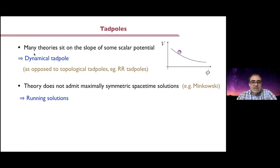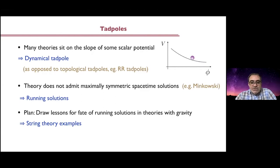The vacuum is a source for that field, and the theory does not admit maximally symmetric spacetime solutions like Minkowski. Rather you have running solutions — consistent solutions to the equations of motion that depend on some spatial coordinates, breaking maximal symmetry. The plan is to look at these evolving configurations, these running solutions, and try to draw lessons which may be fairly general for theories with gravity and these kinds of tadpoles, focusing on string theory examples.